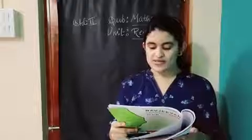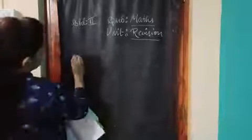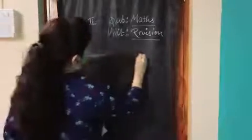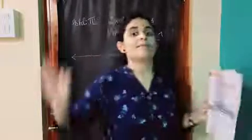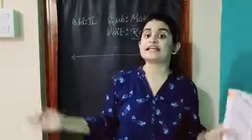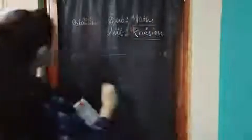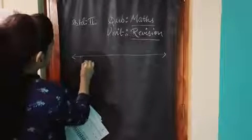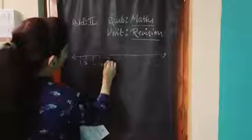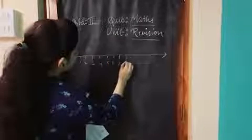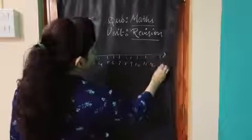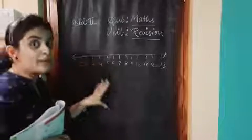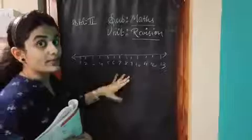Write the correct number in the boxes with the help of the number line. Let's draw a number line on the blackboard. Hum number line draw karenge. Numbers likhte hain: 1, 2, 3, 4, 5, 6, 7, 8, 9, 10, 11, 12, 13. Okay, ye hai hamaari number line. Toh bachho, ise kya kehte hain? Ye hamaari number line.